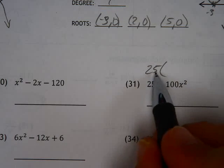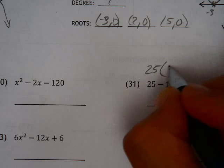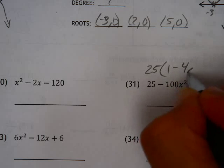Now we're not solving for anything so you don't have to divide by 25, but if you're factoring it, it needs to be part of your answer. You take out the 25, you have 1 minus 4x squared.